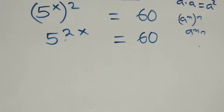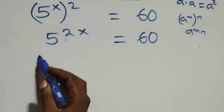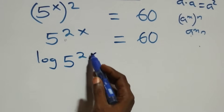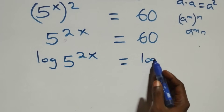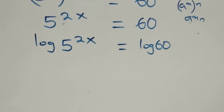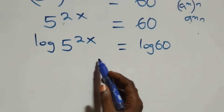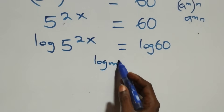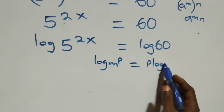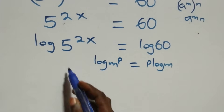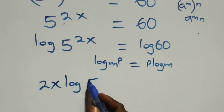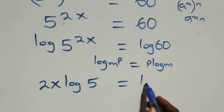Then the next step: we take the log of both sides. So we have log of 5 raised to the power 2x equals log 60. We then apply the power rule of logarithms, where log of n raised to power p is the same thing as p·log n. That gives us 2x·log 5 equals log 60.